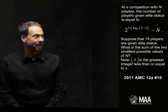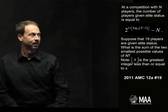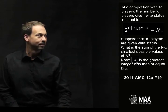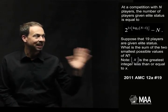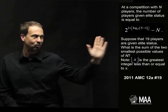At a competition with N players, the number of players given elite status is given by this crazy formula. And we know that 19 players are given elite status. And the question is, say something about N. It's a little bit more complicated than that, but basically that last sentence says, do something with N.